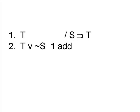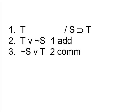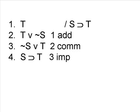We don't want to add S, because then there will be no way to get the conditional S implies T. To see how this works, let's add the negation of S. Once we add the negation of S, we can do commutativity to get the letters in the right order. Now we still have the problem of how to get rid of the negation and how to change the disjunction sign to a conditional. Fortunately, we have the rule of implication, which allows us to do both of these, and so we can derive the conclusion, thus proving the argument valid.